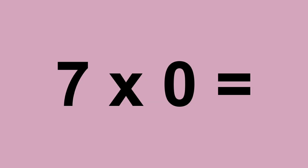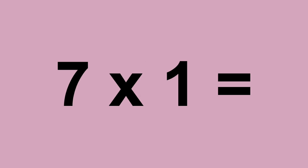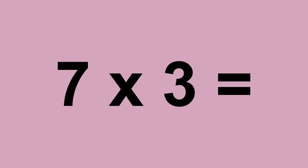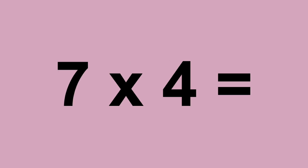Seven times zero equals zero. Seven times one equals seven. Seven times two equals fourteen. Seven times three equals twenty-one. Seven times four equals twenty-eight.